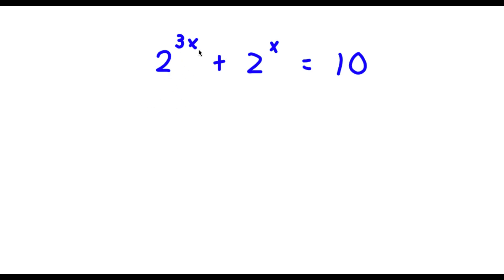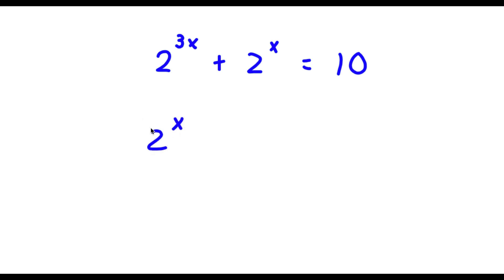Alright, so I have 2 to the power of 3x plus 2 to the power of x is equal to 10. The first thing I'm going to do is rewrite 2 to the power of 3x as 2 to the power of x, to the power of 3.